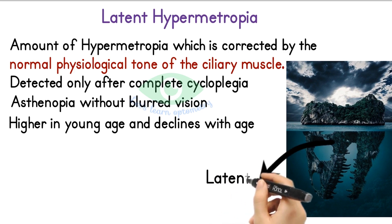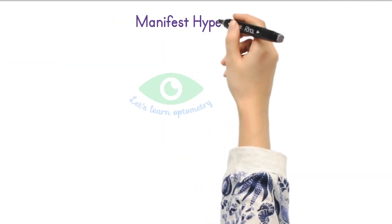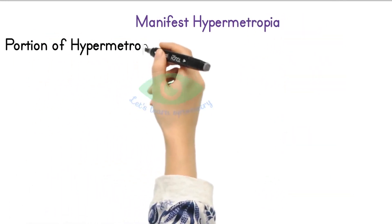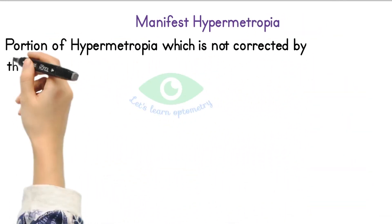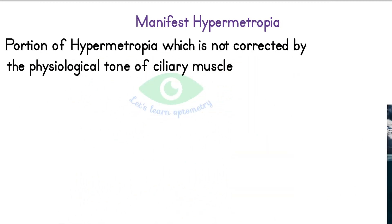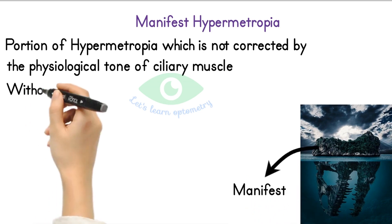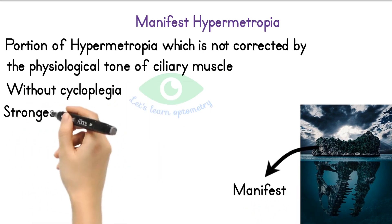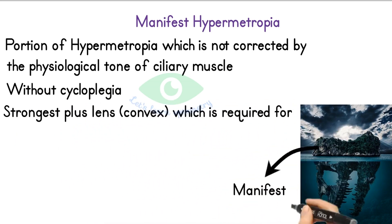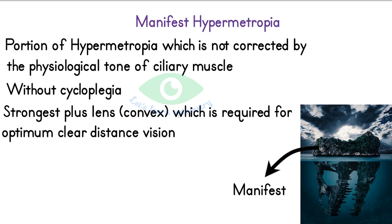Imagine a hidden iceberg in the sea of cycloplegia to remember latent hypermetropia. Manifest hypermetropia is the remaining portion which is not corrected by the normal physiological tone of the ciliary muscle. It can be detected without cycloplegia. The strongest plus lens required for optimum clear distance vision is the manifest component of hypermetropia.